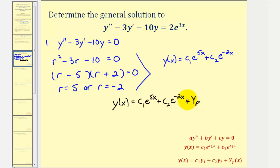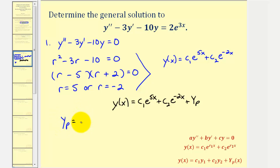Because we're looking for a particular solution where the left side equals 2e^(3x), a good guess for Yp would be some constant times e raised to the power of 3x. We'll go ahead and make the guess that Yp = Ae^(3x). Now we'll find the first and second derivatives and then perform substitution into the original differential equation, and then solve for the value of A.